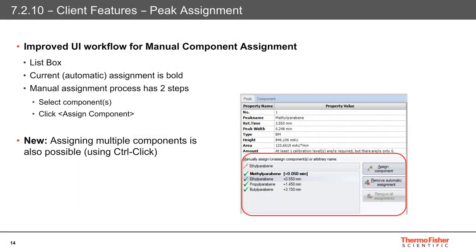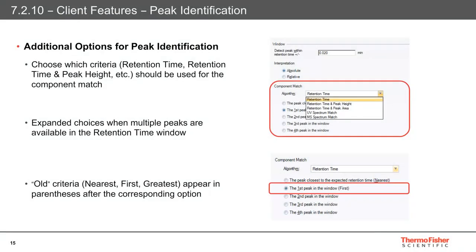The process of assigning components manually has now been made simpler with a new and improved user interface. The layout is more intuitive with the current automatic component displayed in bold, and you can also use a control key to assign multiple components from the associated list. In previous versions of the software, we could apply identification criteria to manage cases where the retention window of a component included multiple peaks. These criteria were the first peak in the window, the nearest peak closest to the expected retention time, the peak with the greatest height, or assignment using the UV and MS spectrum matches. This release expands the criteria to include the second, third, or fourth closest in terms of retention time, greatest in relation to peak height, and largest peak in terms of area in the retention time window. The additional criteria will give the user more flexibility when looking for a positive and accurate match for peak identification.